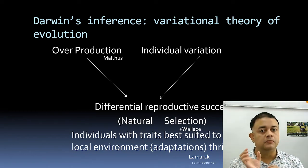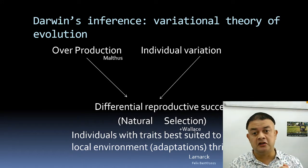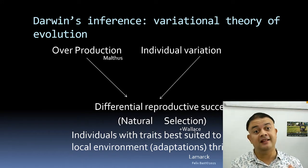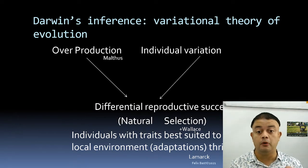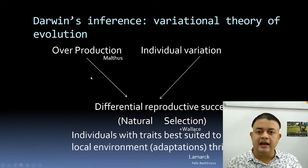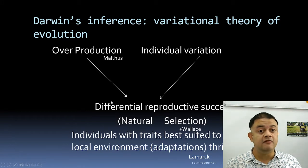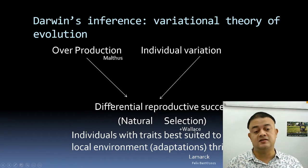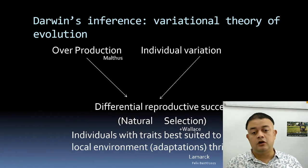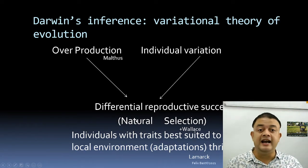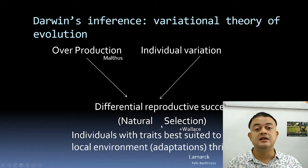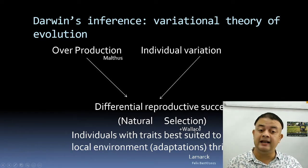So these two observations — overproduction and individual variation — are Darwin's primary observations. The overproduction idea came from Malthus, who wrote the famous essay on human population. From these two observations Darwin arrived at what is called variational or adaptive evolution — differential reproductive success — which is exactly what we call natural selection.